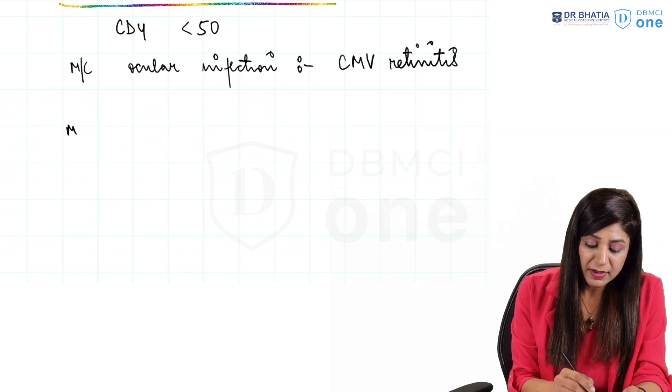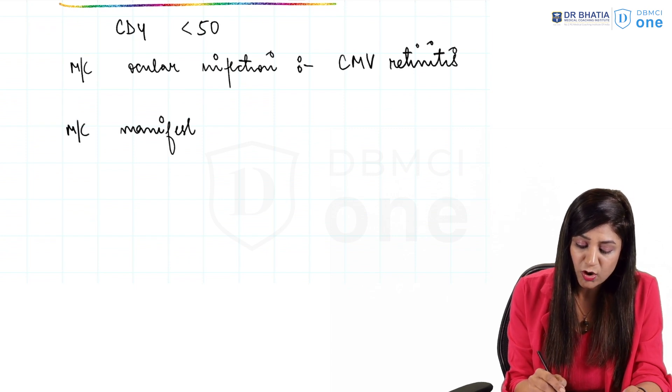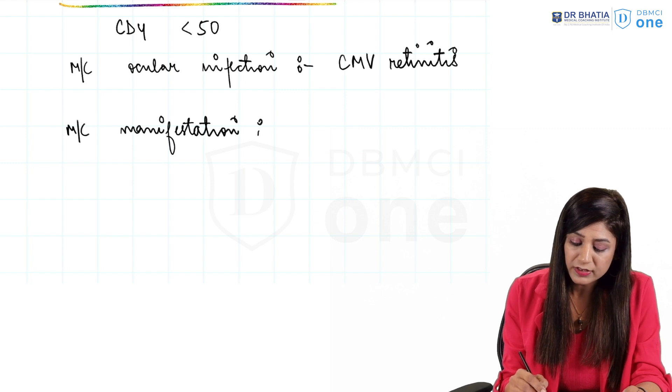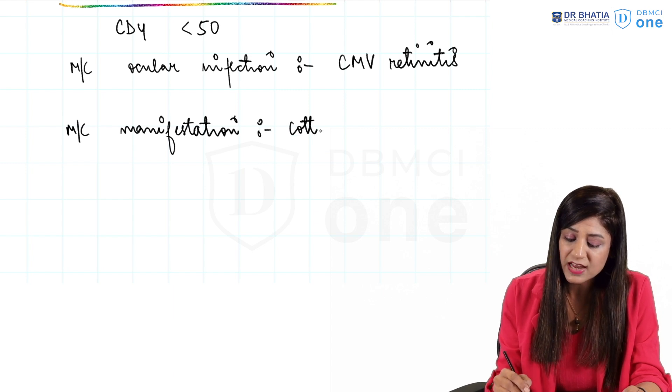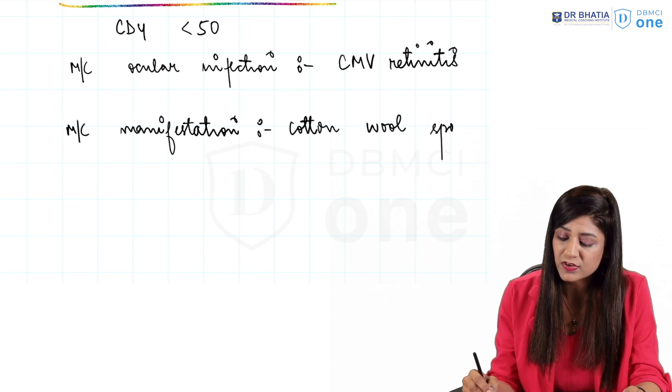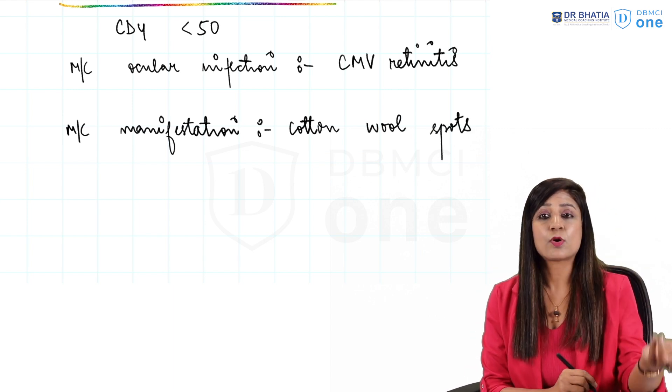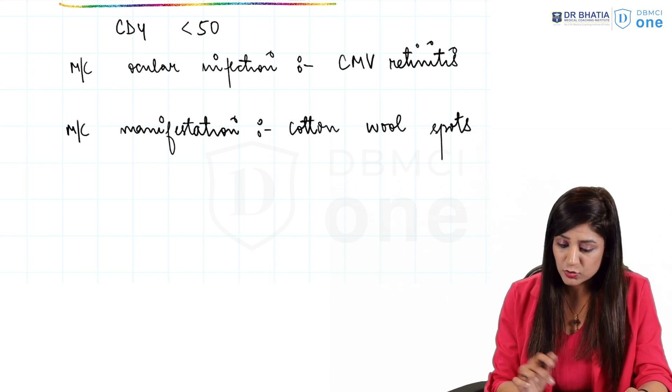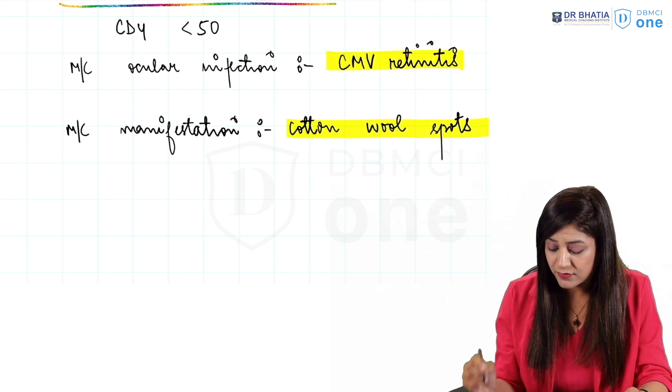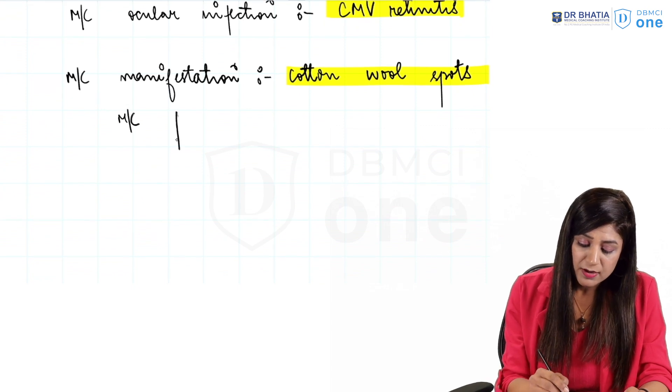The most common manifestation of this will be the cotton wool spot. So you can be asked as a differential diagnosis also of the cotton wool spots: we have hypertension retinopathy, we have CRVO, we have anemia, retinal hypoxia, and we have this one also. Most common ocular infection, most common manifestation.